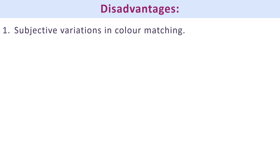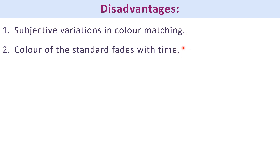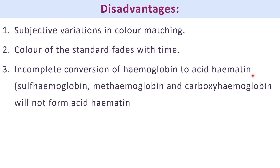Disadvantages: first, there can be subjective variations in color matching. Second, the color of the standard can fade with time, affecting accuracy. Third, there can be incomplete conversion of hemoglobin to acid hematin — for example, derivatives like sulfhemoglobin, methemoglobin, or carboxyhemoglobin will not be converted to acid hematin.